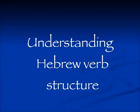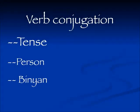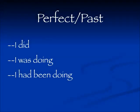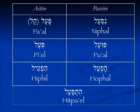Shalom. Today we're going to cover another unit on understanding Hebrew verb structure. Remember the verb conjugation will show us the tense, the person, and the binyan. We have started in the perfect or the past tense, which in Hebrew will cover meanings like 'I did,' 'I was doing,' 'I had been doing' — anything which is in the past. Remember the seven binyanim. Today we're going to cover the Piel.